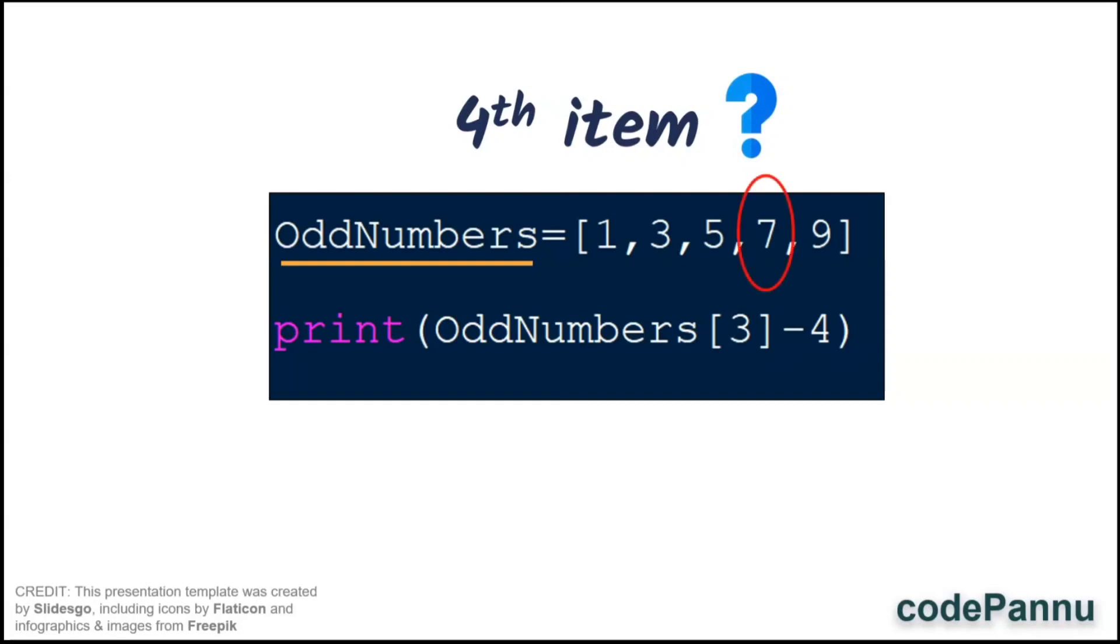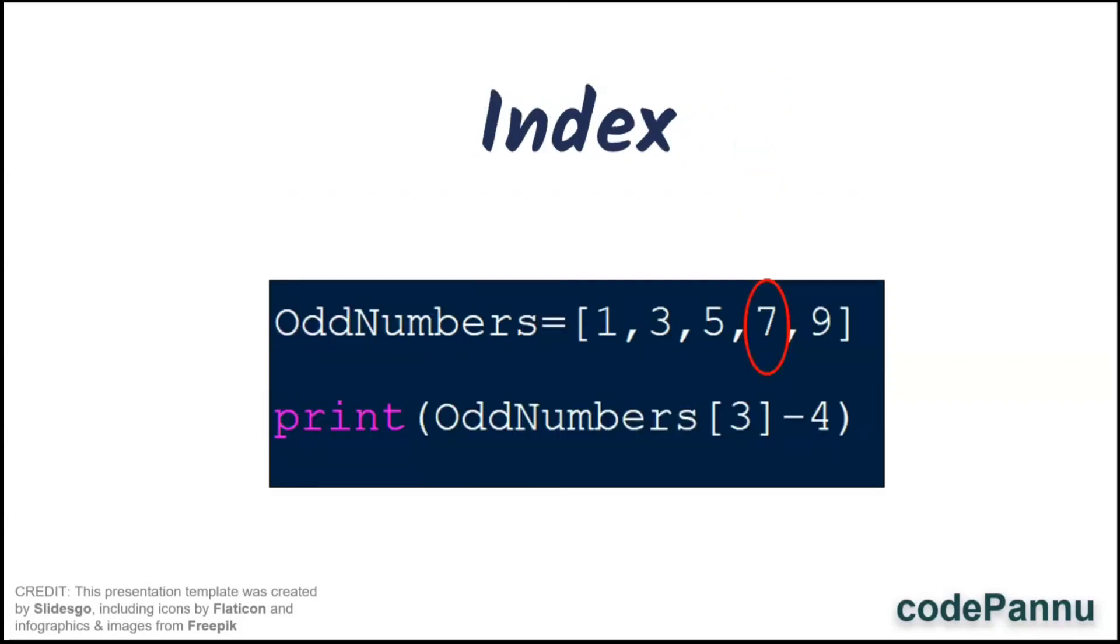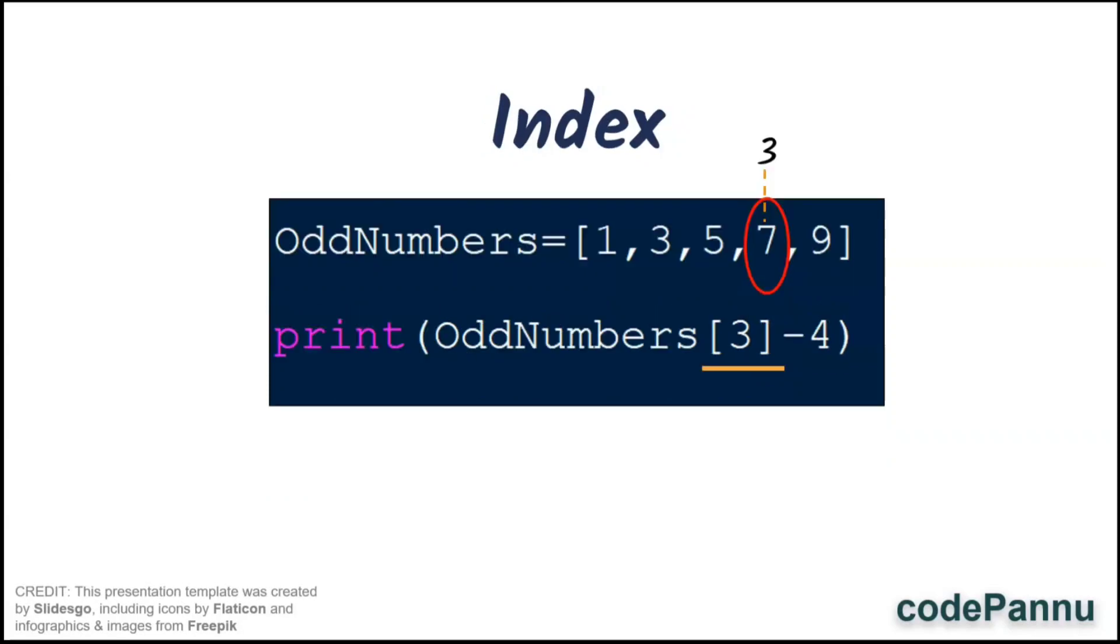To take the item from the list we use the index and here because it is the fourth item and as our index starts with 0, 1, 2, etc. we have to give the index as 3.